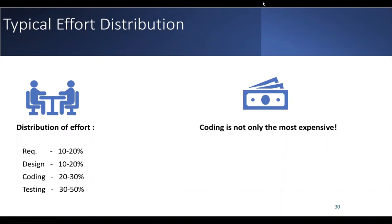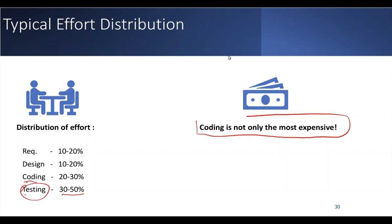The typical effort distribution varies across phases. Requirement analysis and specification consumes 10–20% of effort, the design phase also 10–20%, the coding phase 20–30%, and the testing phase 30–50%. Interestingly, coding itself is not the most expensive phase — a significant portion of total effort is consumed in testing.